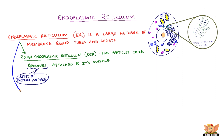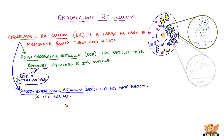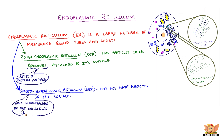Another type of endoplasmic reticulum is the smooth endoplasmic reticulum, abbreviated as SER. It does not have ribosomes on its surface. It helps in the manufacture of fat molecules, or lipids, which are important for cell function. The SER in liver cells of animals plays a crucial role in detoxifying many poisons and drugs.